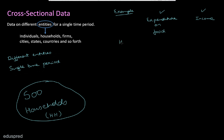Imagine we go to household number one — HH1. For this exercise, imagine you are household number one and I am coming to your home to collect data. I am going to ask you: what is your expenditure on food and what is your income? For this question to be sensible, I have to mention a specific time period — for example, the last month, the last quarter, or the year 2019.